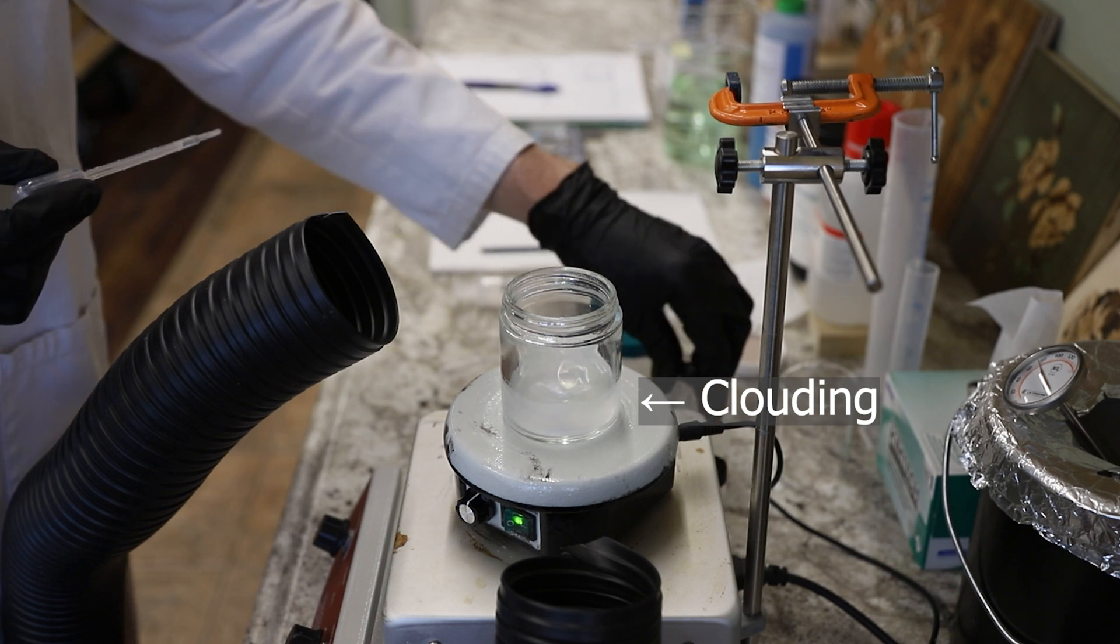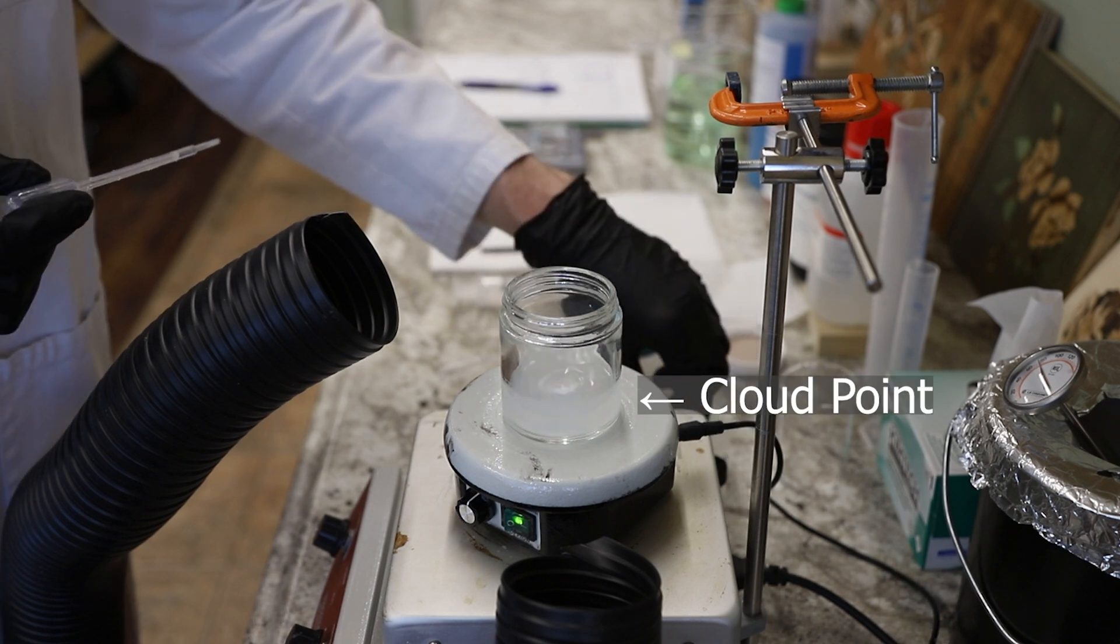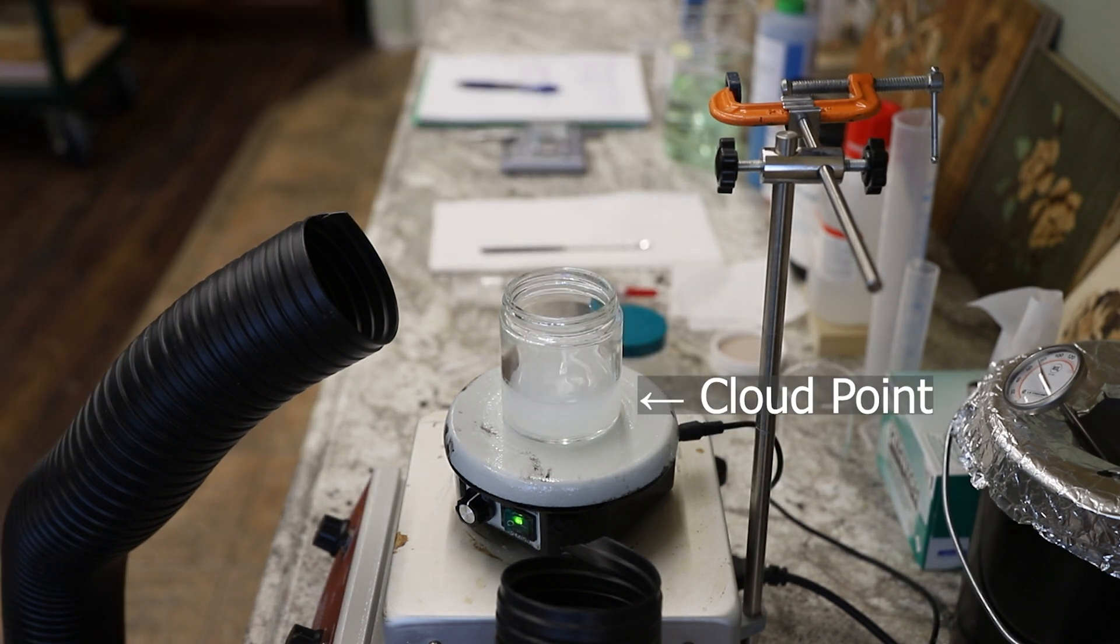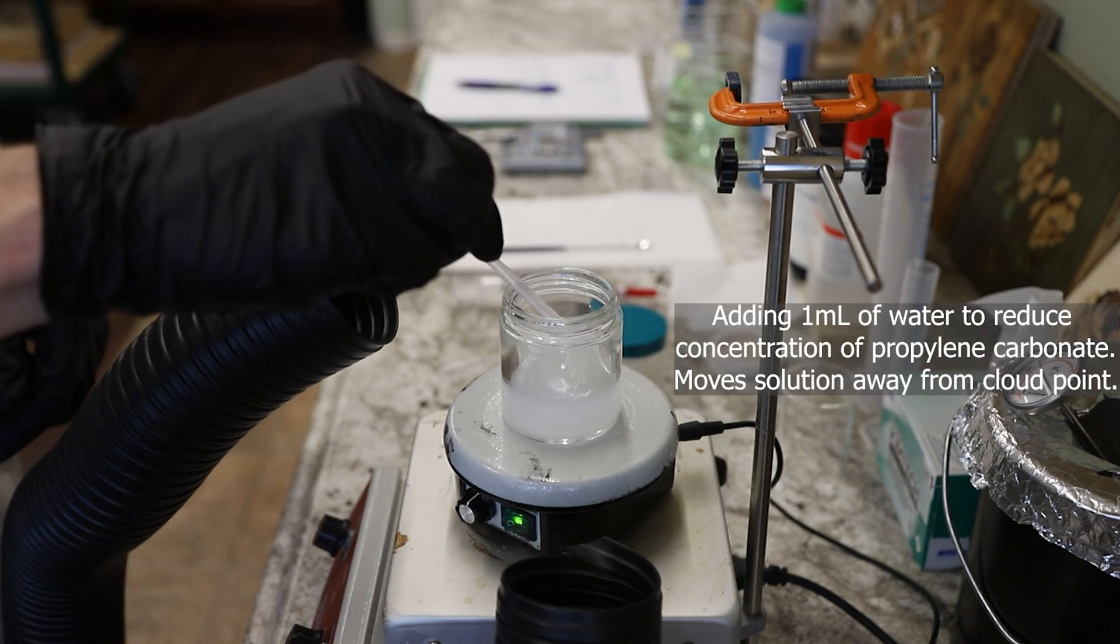And then it gets to a certain point where it is at its cloud point, and that is where the solution is totally opaque. You can no longer see the stir bar. And at this point, the solution is not usable. You actually have to bring it back a little bit.